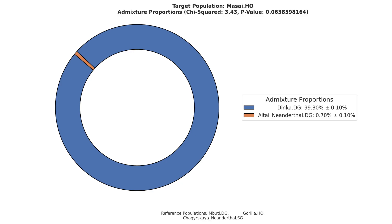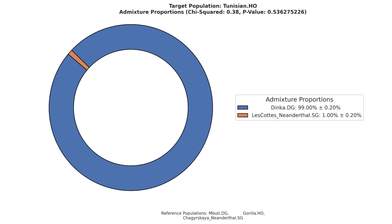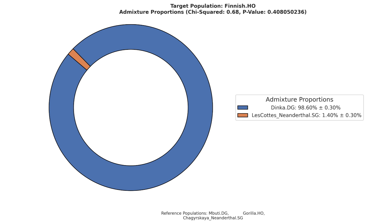Starting from the lowest: the Maasai of Kenya scored 0.7%, the Somali scored 0.8%, the Ethiopian Jews scored 0.9%, the Tunisians scored 1.0%, the Brahui of Pakistan scored 1.1%, the Punjabi of Pakistan scored 1.1%, the Saudis scored 1.2%, and the Spanish scored 1.3%.